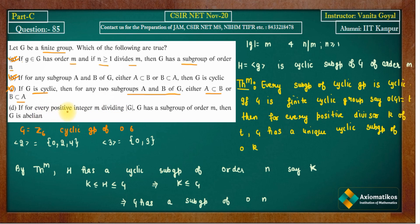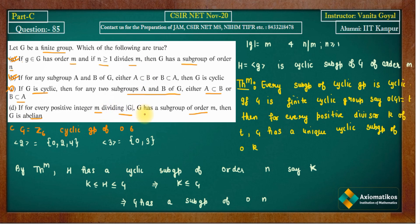Option D states: if for every positive integer m dividing |G|, G has a subgroup of order m, then G is abelian. To test this, consider G = S3, the symmetric group on 3 elements, which is a non-abelian group.